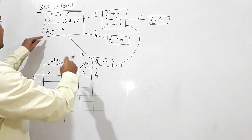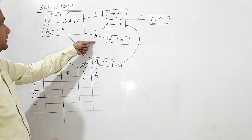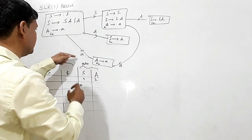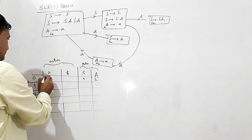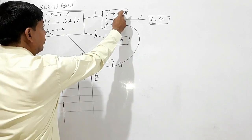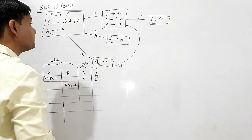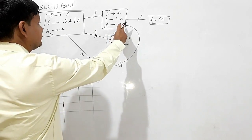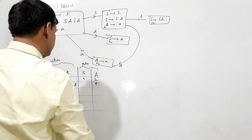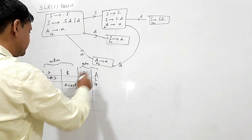In state 0, if I read S I am reaching state 1. If I read A I am reaching state 2. In state 0, if I read small a I am shifting to state 3 — shift 3. In state 1, at dollar it will be accept. At capital A, I go to state 4. And at small a, shift 3.